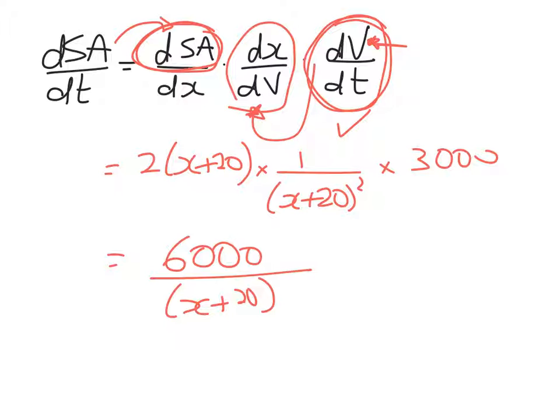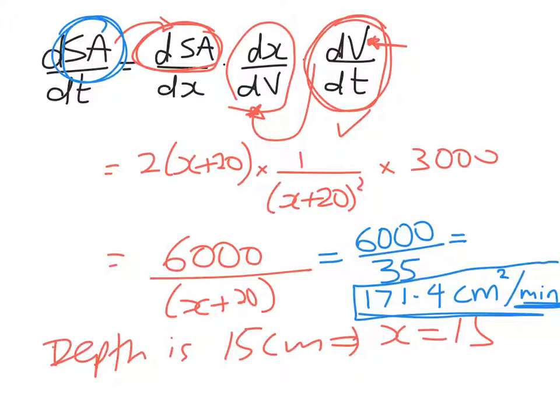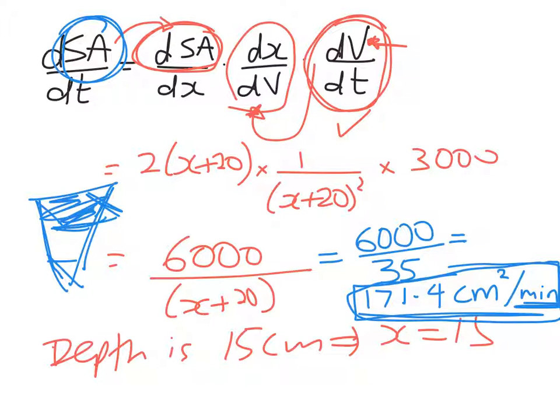We want to know the rate of change when the depth is 15 centimeters. So x is 15. We're going to substitute that in. That works out to be 6,000 divided by 35. And that comes out to be 171.4. Now my units, because I'm working with surface area, must be centimeters squared. And that's per minute, because we're sticking with our time units from the start of the question. So the rate at which the surface area of the water trough is increasing when the water's flowing in at 3,000 cubic centimeters per minute is 171.4 square centimeters per minute.